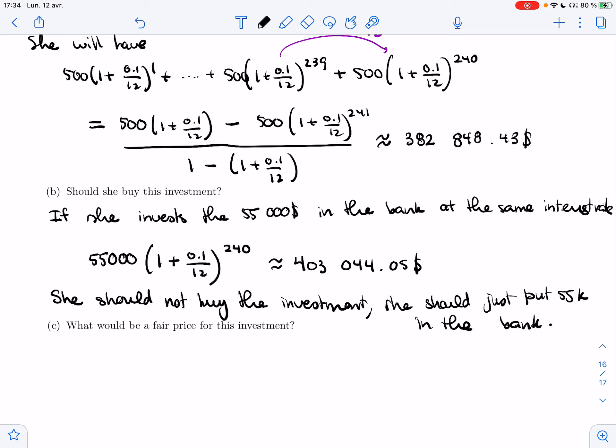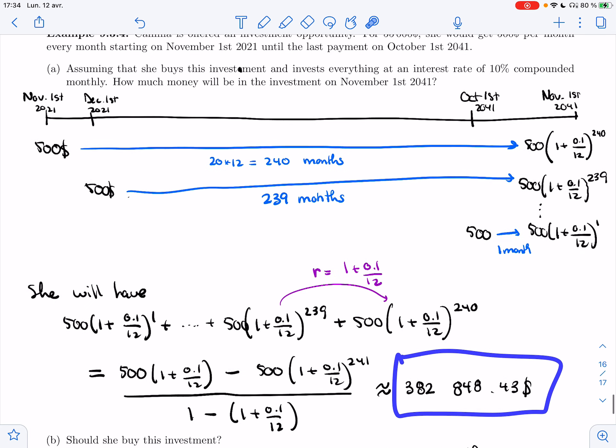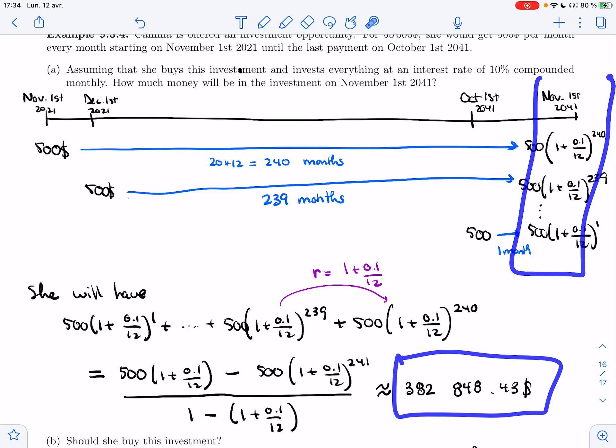So this says that the $55,000 is not the right price for this investment. This is not how much the investment is worth. So here's question C. What would be a fair price for this investment? So really, we have this $382,000. That's how much money you have here. In this case, we don't have a choice. We're asked for how much this is worth today, so we need to bring it back to today.